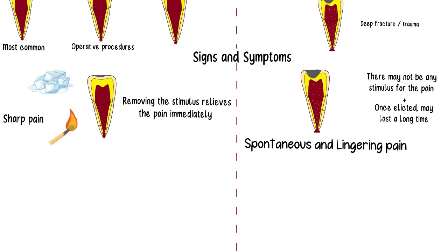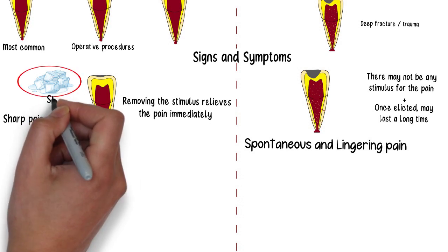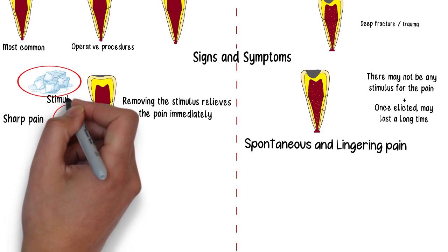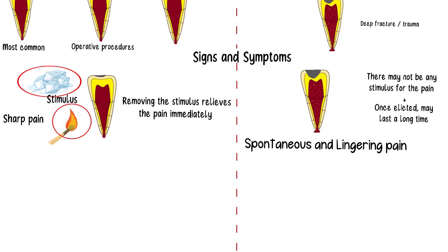To summarize the diagnosis: the pain of reversible pulpitis needs a stimulus to begin — it is non-spontaneous and non-lingering in nature. The pain dies off as soon as the stimulus is removed. The pain of irreversible pulpitis, in contrast, is spontaneous and lingering in nature.